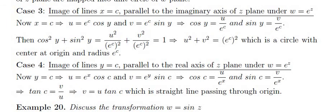Case 4: Image of the line y = c (parallel to the real axis) under w = e^z. Substituting y = c: u = e^x cos c and v = e^x sin c. Taking the ratio gives tan c = v/u, so v = u tan c, which is a straight line passing through the origin.